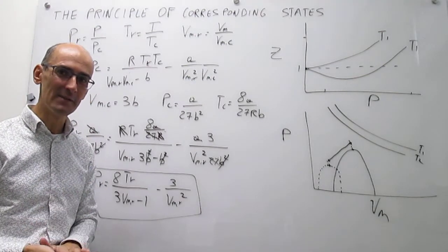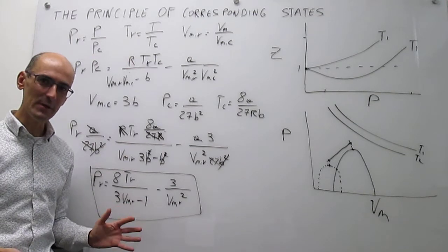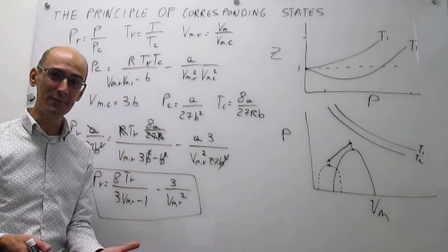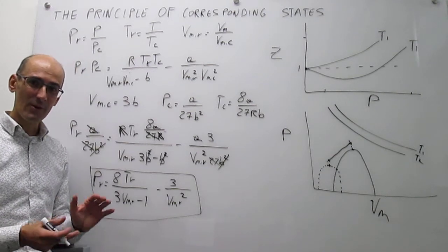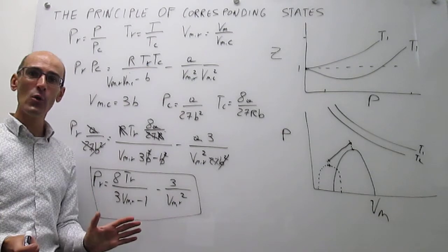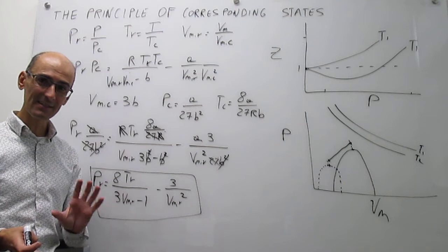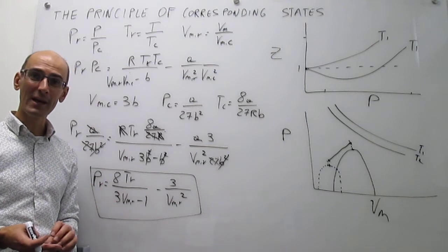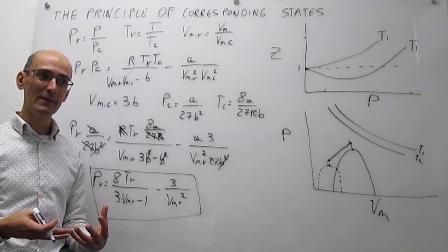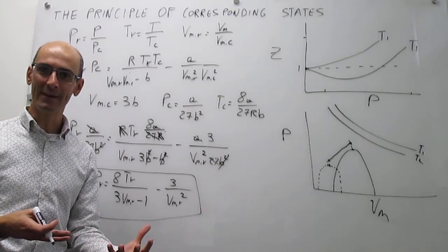The result is a very simple and telling expression: the reduced pressure P_r equals 8T_r over (3V_r minus 1) minus 3 over V_r squared. This is the van der Waals equation of state entirely in terms of reduced variables, and what is absolutely fascinating is that it does not depend on the constants a and b, which are specific to each gas. In terms of reduced variables, there is no dependence on the nature of the gas — the equation is exactly the same for all gases.